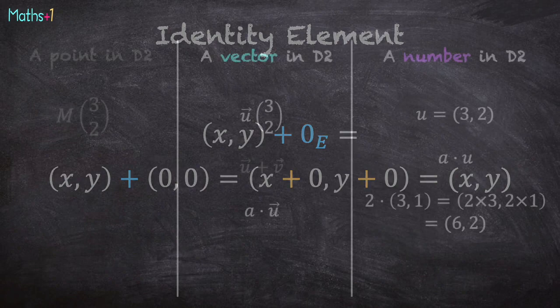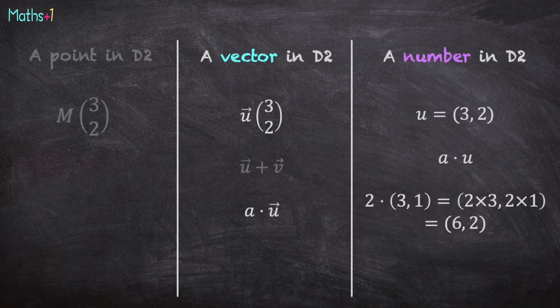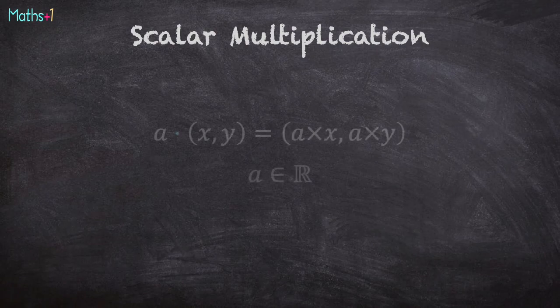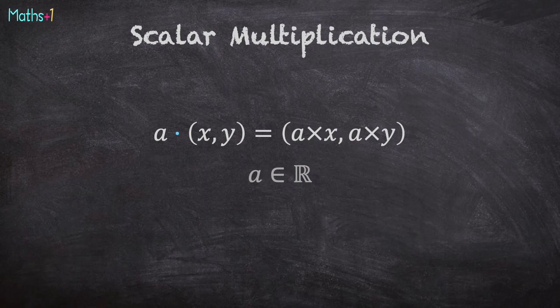It is possible to multiply our new kind of numbers by a scalar. We obtain exactly the same thing that we obtain with vectors. Scalar multiplication is defined with the following formula: a dot (x, y) is (a times x, a times y), with a a real number.